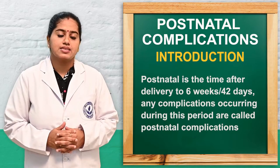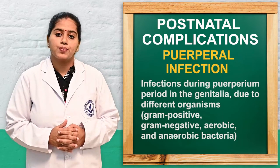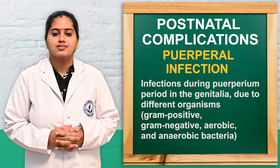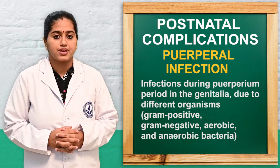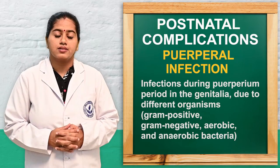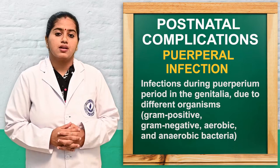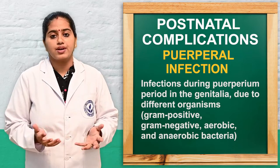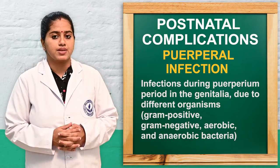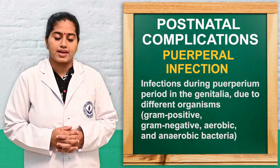The first condition is puerperal infections. The infections that take place during the puerperium period in the genitalia are known as puerperal infections. These can be caused by different organisms such as gram positive, gram negative, aerobic, and anaerobic bacteria.